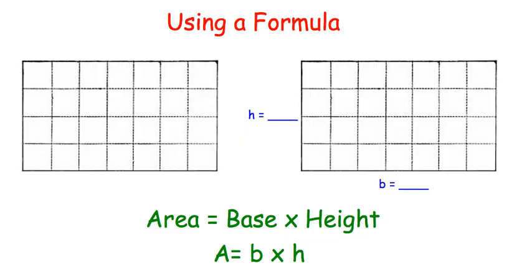In the past you've been finding the area of rectangles and parallelograms by simply counting the squares. Now we're going to start using a formula, and our formula is area equals base times height. So to find the area of this rectangle we're going to multiply the base times the height.